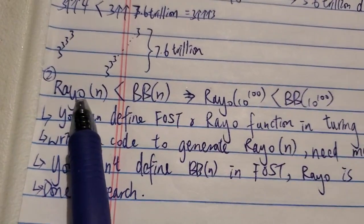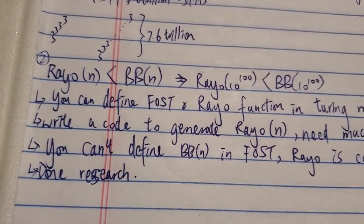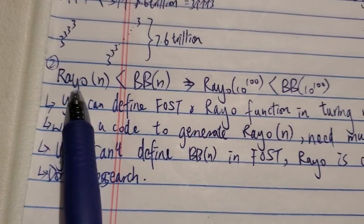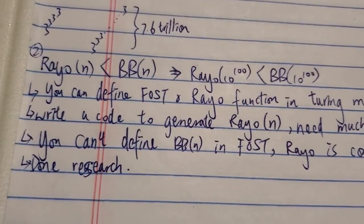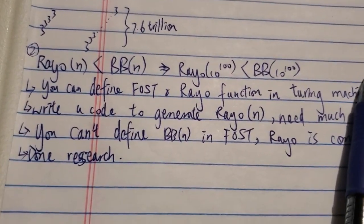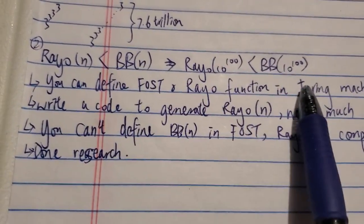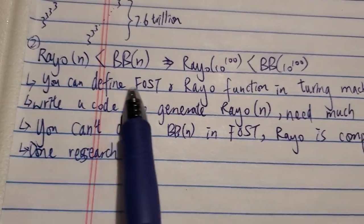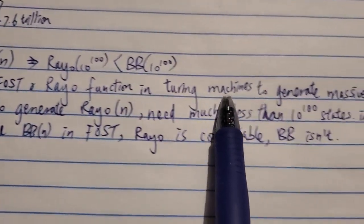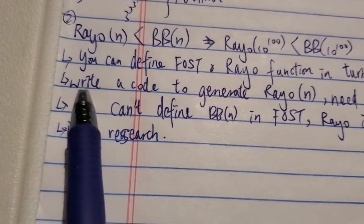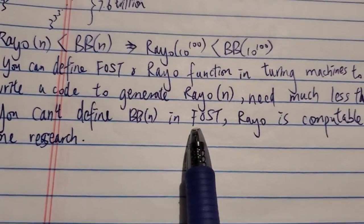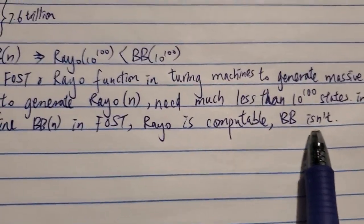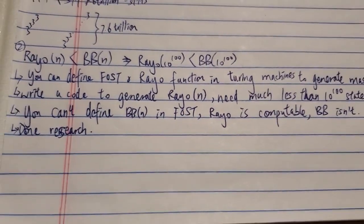One more thing I want to bring up — it's not a common misconception, but I recently got a commenter who said he'd done a lot of research on Busy Beaver and Rayo, and he claimed the Busy Beaver function is much stronger than Rayo's function — so BB(googol) would be much bigger than Rayo(googol). I was confused, because he said whatever is found online says the opposite. In the comment he said you can define first-order set theory and Rayo's function in a Turing machine to generate massive numbers including Rayo's number.